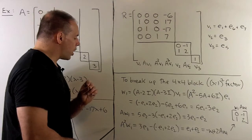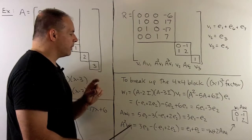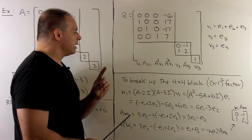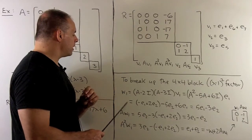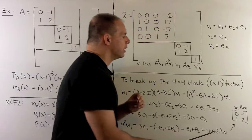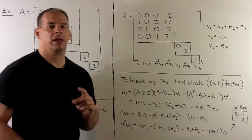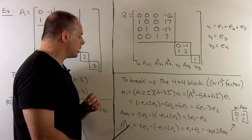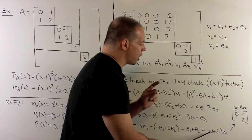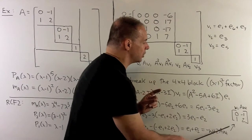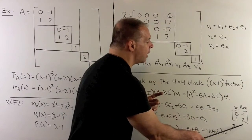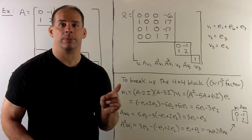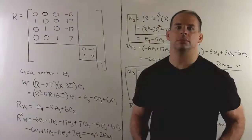We have an invariant plane because A²W_1 is a linear combination of W_1 and AW_1. This also tells us how to set up the two by two block. Applying A to W_1 gives AW_1, so the first column is (0, 1). Applying A to AW_1 gives A²W_1, with the linear combination giving −1 and 2 for the second column. This block corresponds to (λ−1)².